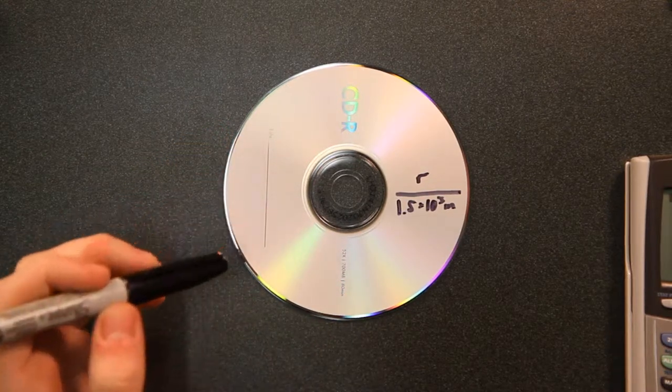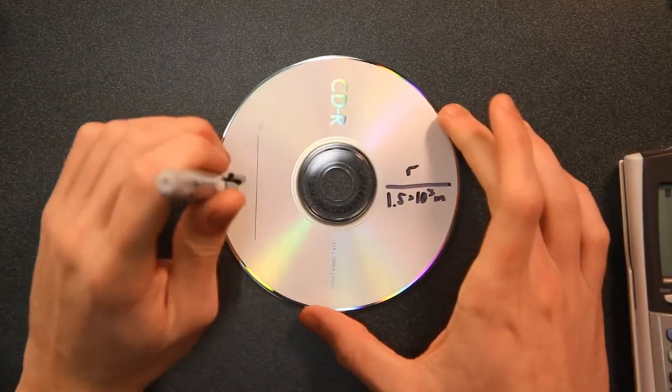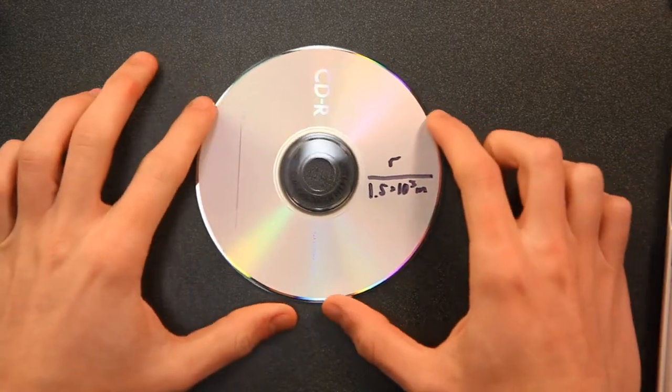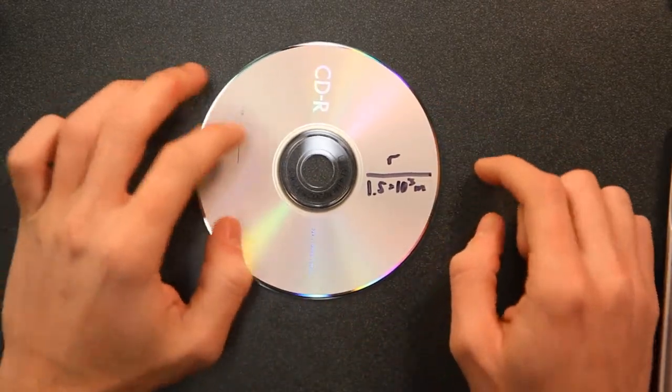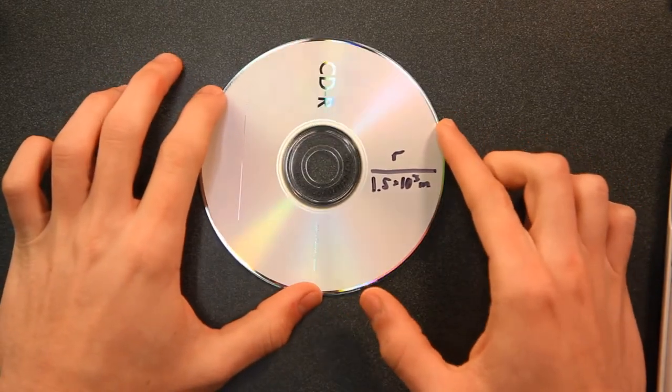All right, we're going to go ahead and use Mr. Austin's Star Trek example of simulated gravity. So what you have here, this disk that you're looking at is supposed to simulate a Star Trek ship, I suppose, or a dock or something like that.